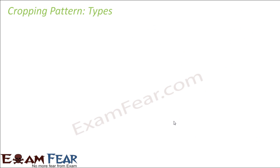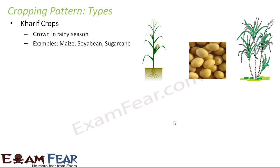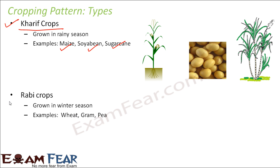Based on these cropping patterns, there are two categories of crops. The first is kharif crops, which are grown in the rainy season when there is a lot of water. Examples include soybean, sugarcane, and maize. The second category is rabi crops, grown in winter season because they need less water.